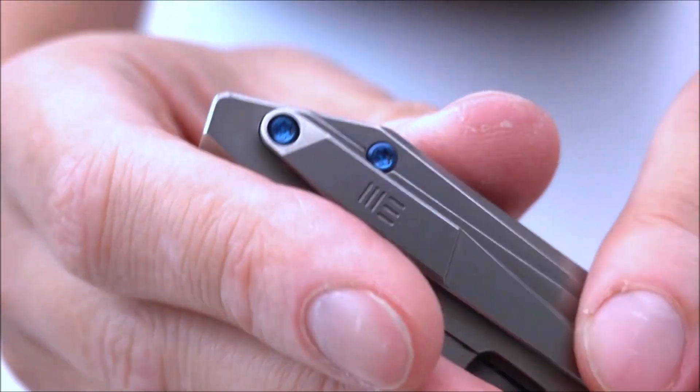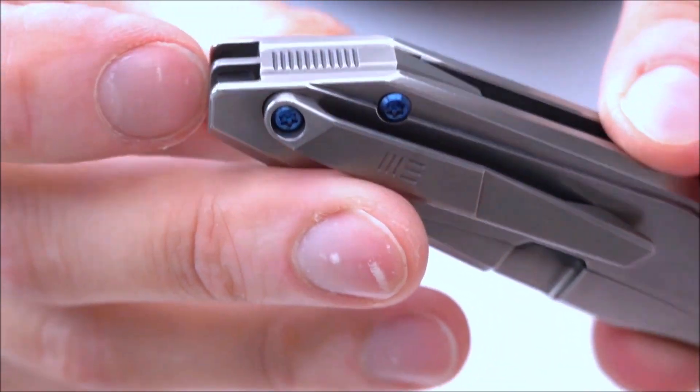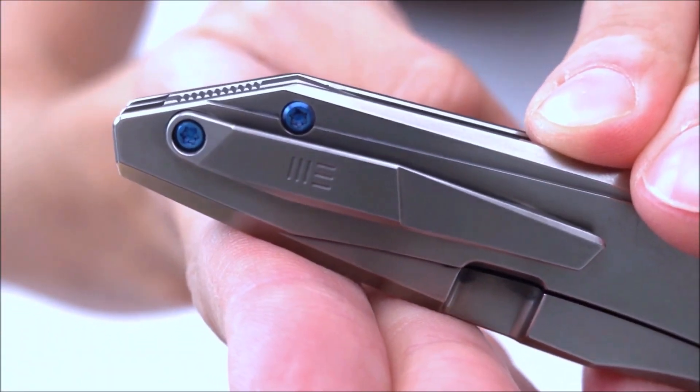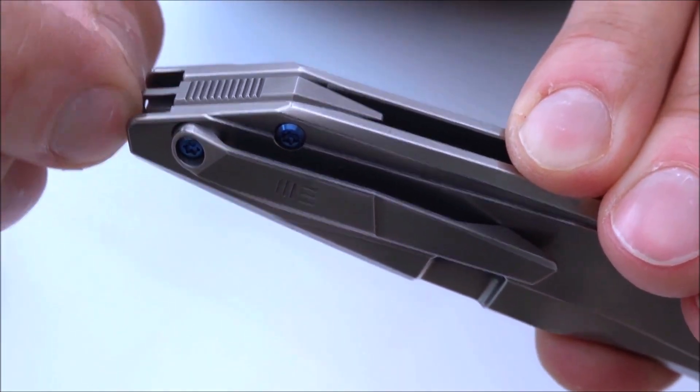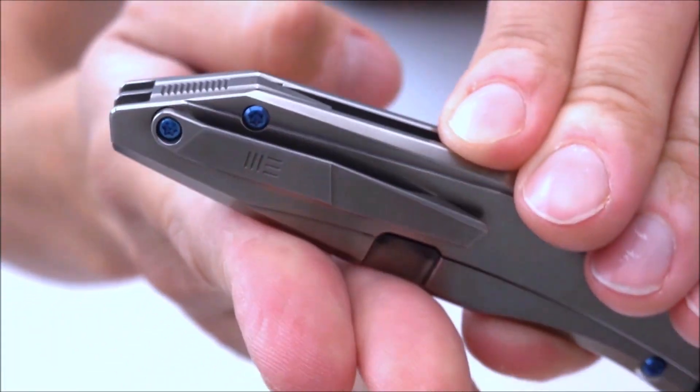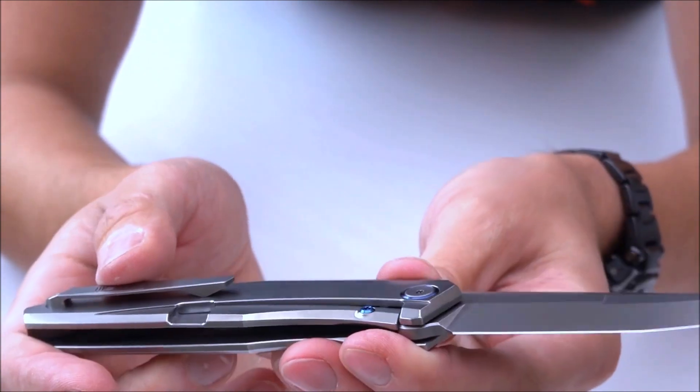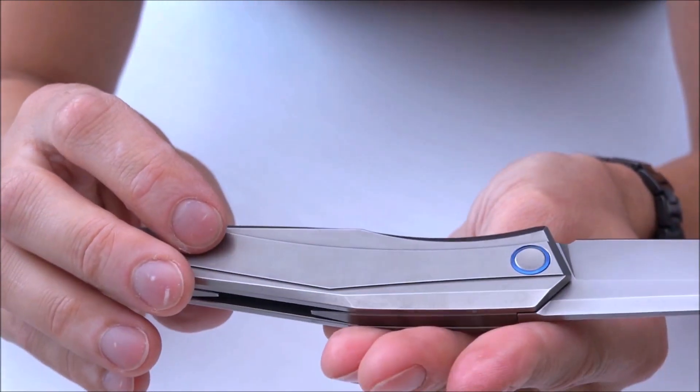We do have a lanyard hole here. It doesn't look like it if you just look at this angle, but if you turn it around a bit, there is actually a possibility to use a lanyard should you want to. I never do that, but should you want to, you do have the option to do so. Lock bar steel insert.